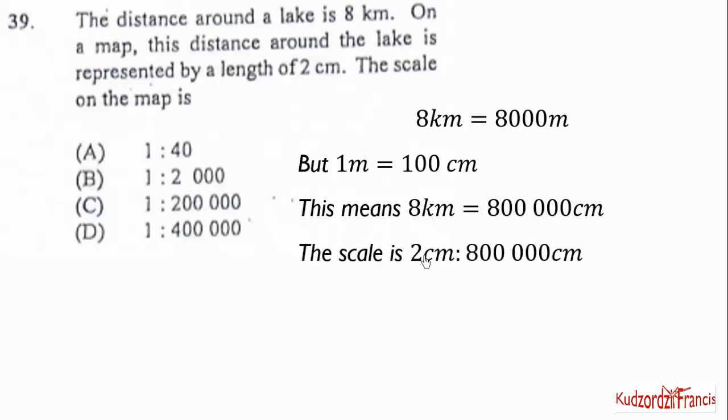So the scale will be 2:800,000, but we can simplify. 2 goes here once, then 2 goes here 400,000 times. Centimeters will simplify and we will get 1 is to 400,000. So the correct answer will be C.